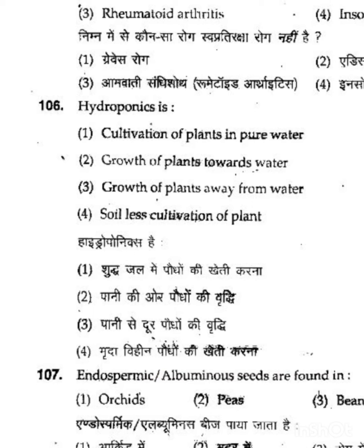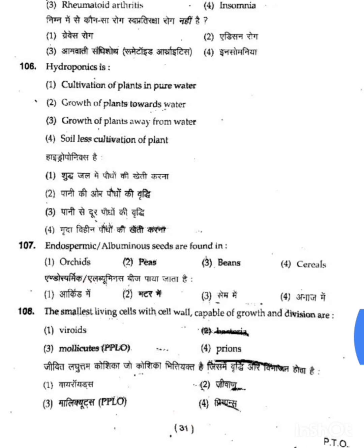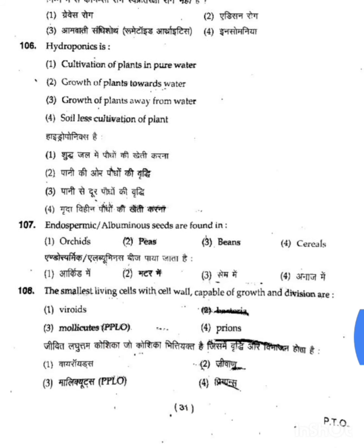Question 106: Hydroponics is — hydroponics refers to cultivating plants without soil, i.e., soilless cultivation. So this matches the fourth option: Soilless Cultivation of Plants. The correct answer for 106 is option 4.